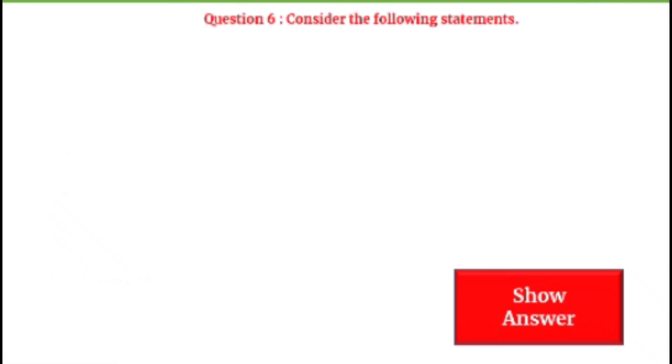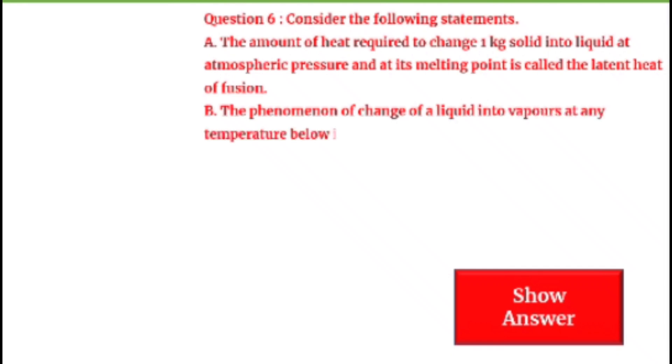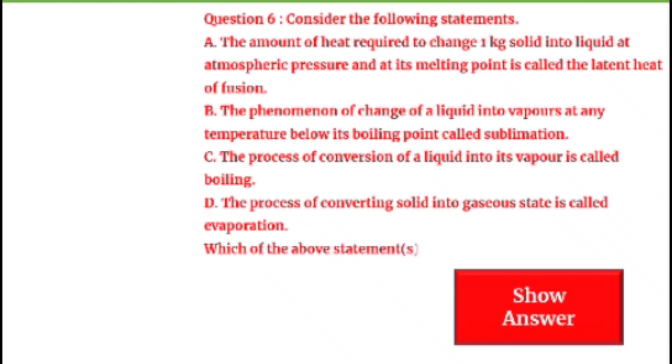Next question on your screen, question 6. Consider the following statements. A: The amount of heat required to change 1 kg solid into liquid at atmospheric pressure at its melting point is called the latent heat of fusion. B: The phenomenon of change of liquid into vapors at any temperature below its boiling point is called sublimation. C: The process of conversion of liquid into its vapor is called boiling. D: The process of converting solid into gaseous state is called evaporation. Which of the statements given is or are correct? Option A and C is the correct option. You can see, A: The amount of heat required to change 1 kg solid into liquid at atmospheric pressure at its melting point is called the latent heat of fusion. C: The process of conversion of liquid into its vapor is called boiling.